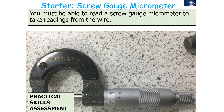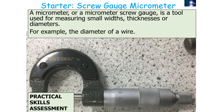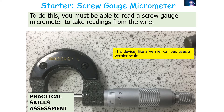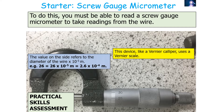You must be able to read a screw gauge micrometer to take readings from a wire — for example, to measure the diameter of a wire. This device, like a vernier calliper, uses something called the vernier scale. The value on the scale can refer to diameter in units of 10 to the minus 5 metres. For example, a reading of 26 on the scale gives 26 times 10 to the minus 5 metres.